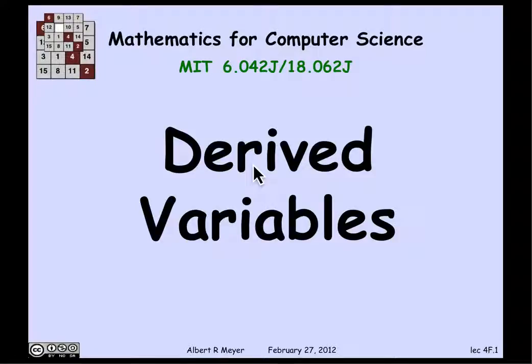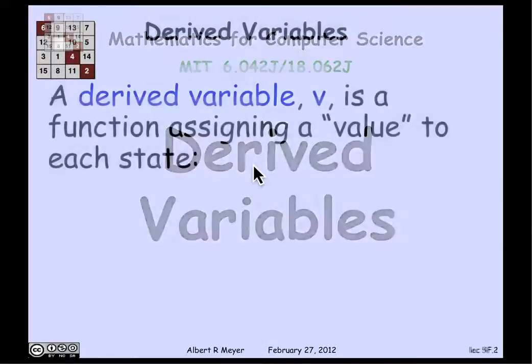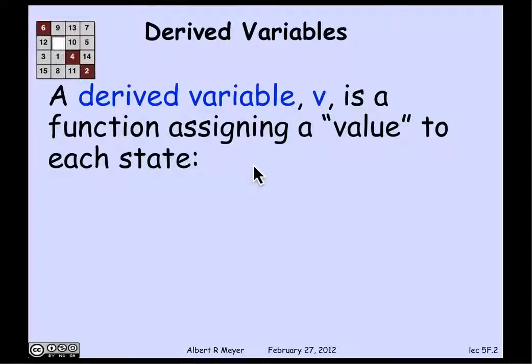The technique of derived variables comes up in analyzing state machines. So let's take a quick look at it together. A derived variable is simply a function on the states of a state machine that assigns some value to the states. It's just that kind of function mapping.